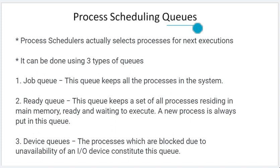If I want to open the system, I want to open WhatsApp, then I want to open the browser, then I want to open the PPT, then I want to initiate 3-4 processes. In queues, we hold the data and processes, and in a systematic, managed form, provide them to the CPU.